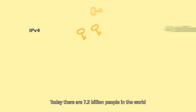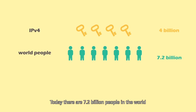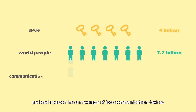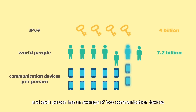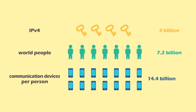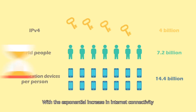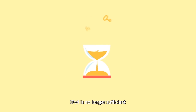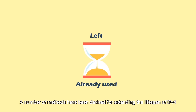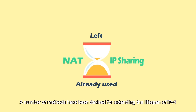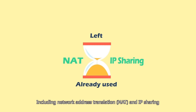Today, there are 7.2 billion people in the world and each person has an average of two communication devices. With the exponential increase in Internet connectivity, IPv4 is no longer sufficient. A number of methods have been devised for extending the lifespan of IPv4, including network address translation and IP sharing.